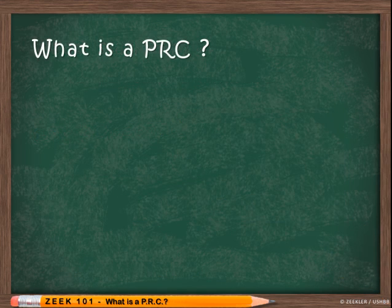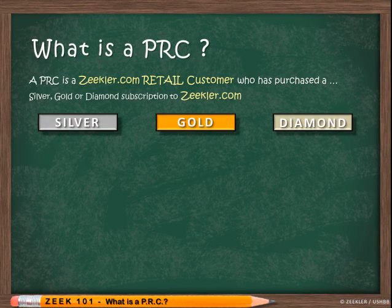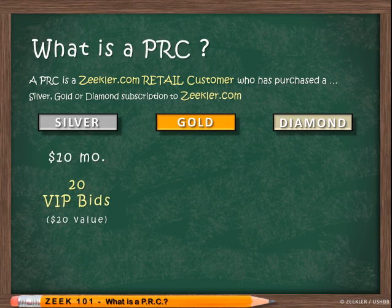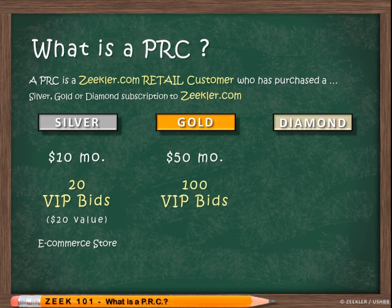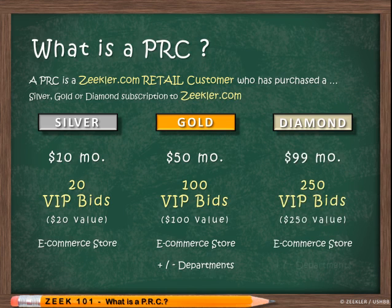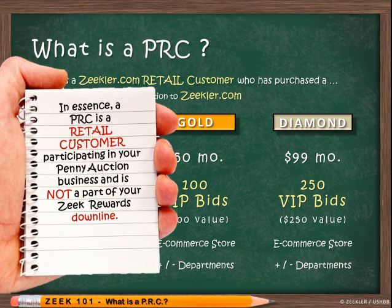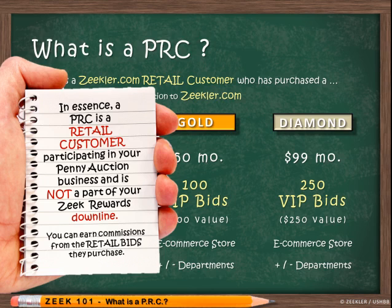A PRC is a Zeekler.com retail customer who has purchased a silver, gold, or diamond subscription to Zeekler.com. The fee for silver PRCs is $10 a month and they receive 20 VIP bids, a $20 value, and an enabled e-commerce store. Gold PRCs pay $50 per month and receive 100 VIP bids, a $100 value, and an e-commerce store with the ability to add or drop departments. Diamond PRCs are $99 per month and receive 250 VIP bids, a $250 value, with an e-commerce store they can fully customize. A PRC is a retail customer participating in your penny auction business and is not part of your Zeek Rewards downline, however you can earn commissions from retail bids they purchase.